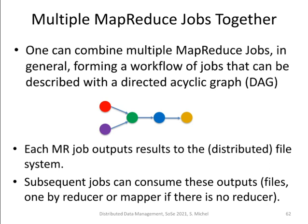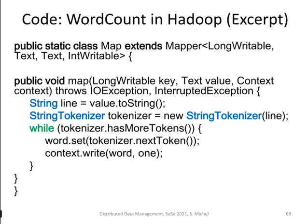You can combine multiple MapReduce jobs together, forming a directed acyclic graph (DAG). This means a MapReduce job consumes the output of other MapReduce jobs that ran before it. MapReduce results are always written back to the distributed file system and can be consumed by subsequent jobs. In this lecture we will focus on single MapReduce jobs, with the exception of iterative processing when we look at graph problems.